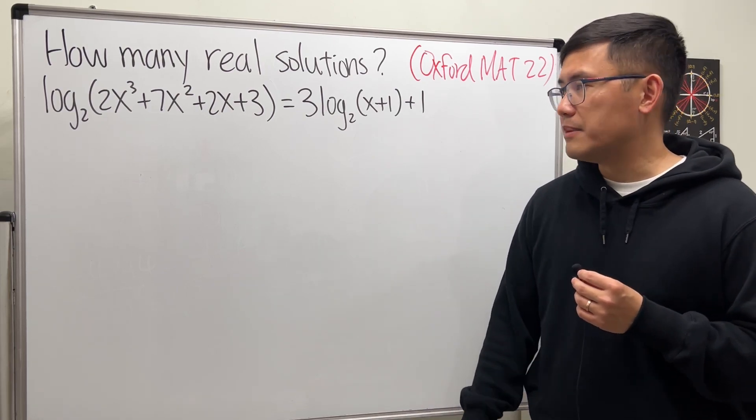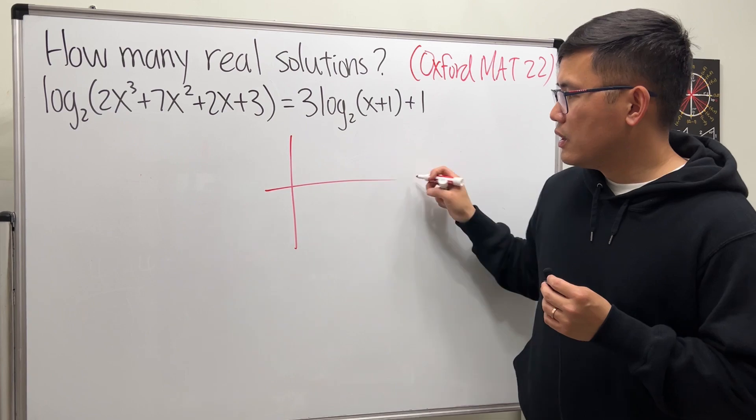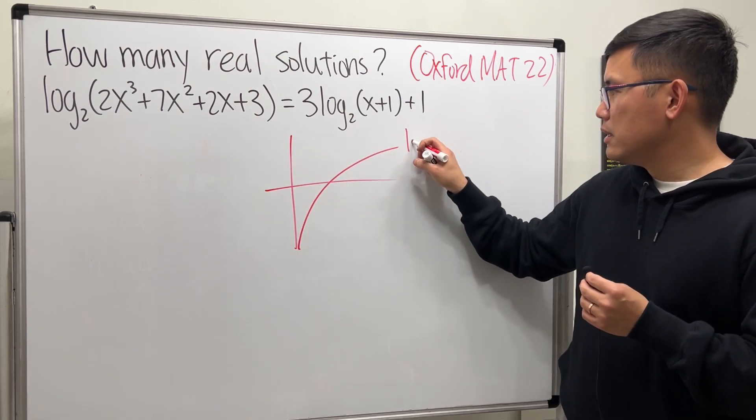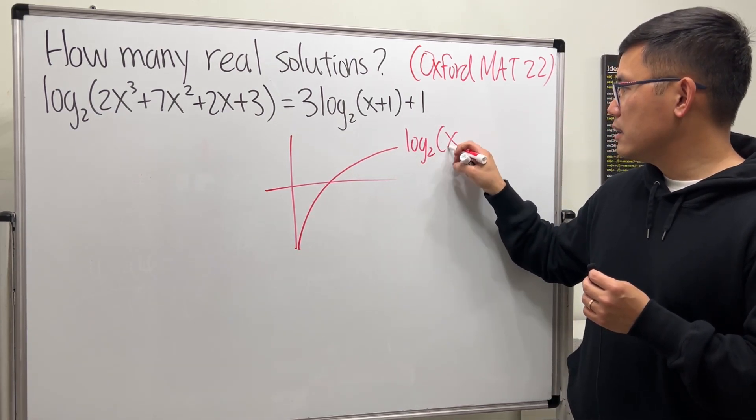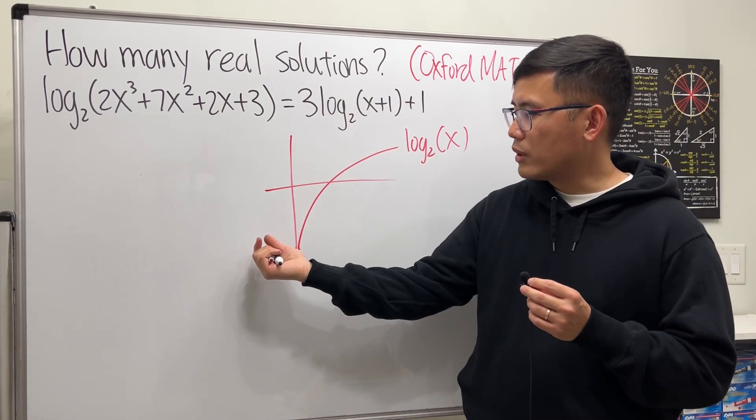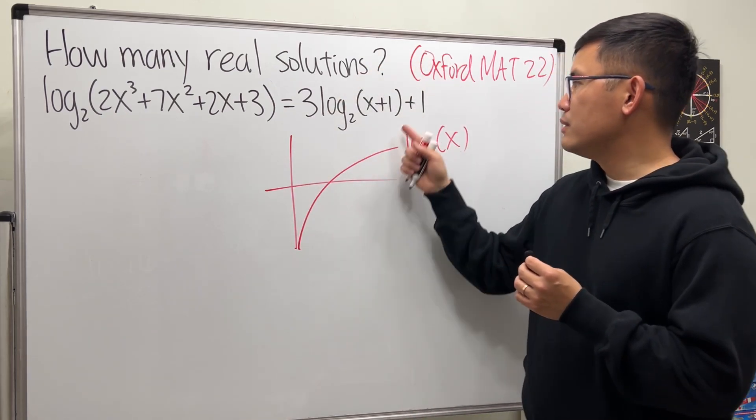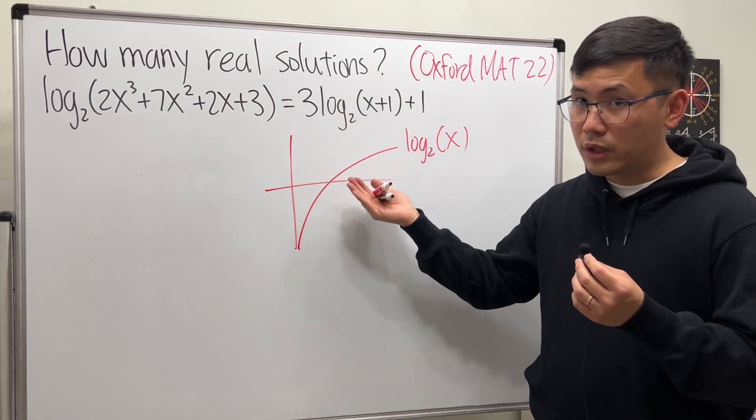For log base 2 of x, it looks like this, not so bad. And then right here if you have x plus one, just move this to the left one time. If you multiply by three, just make it taller. And then plus one, just bring up one time.